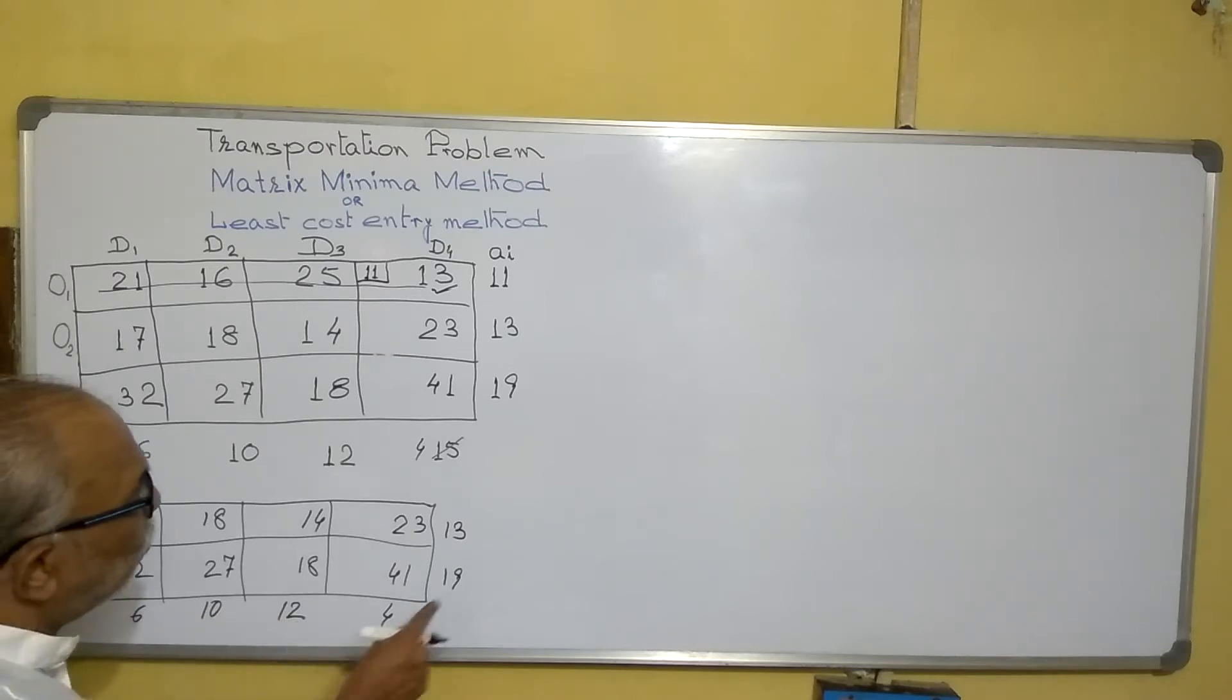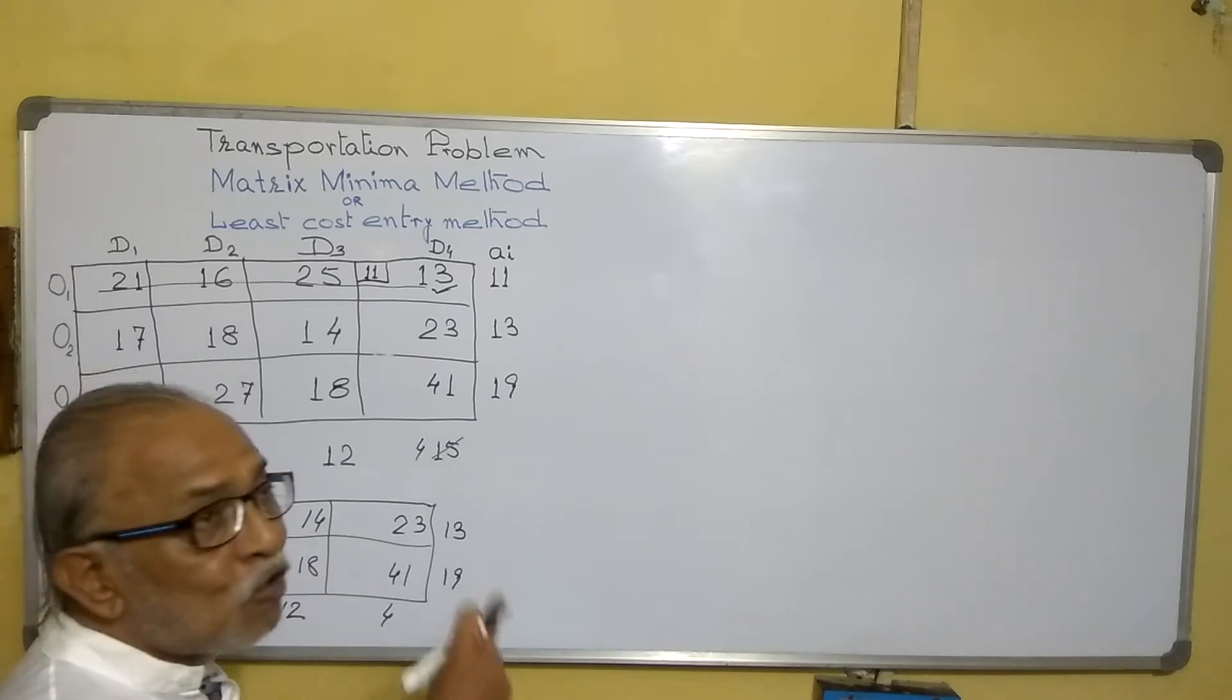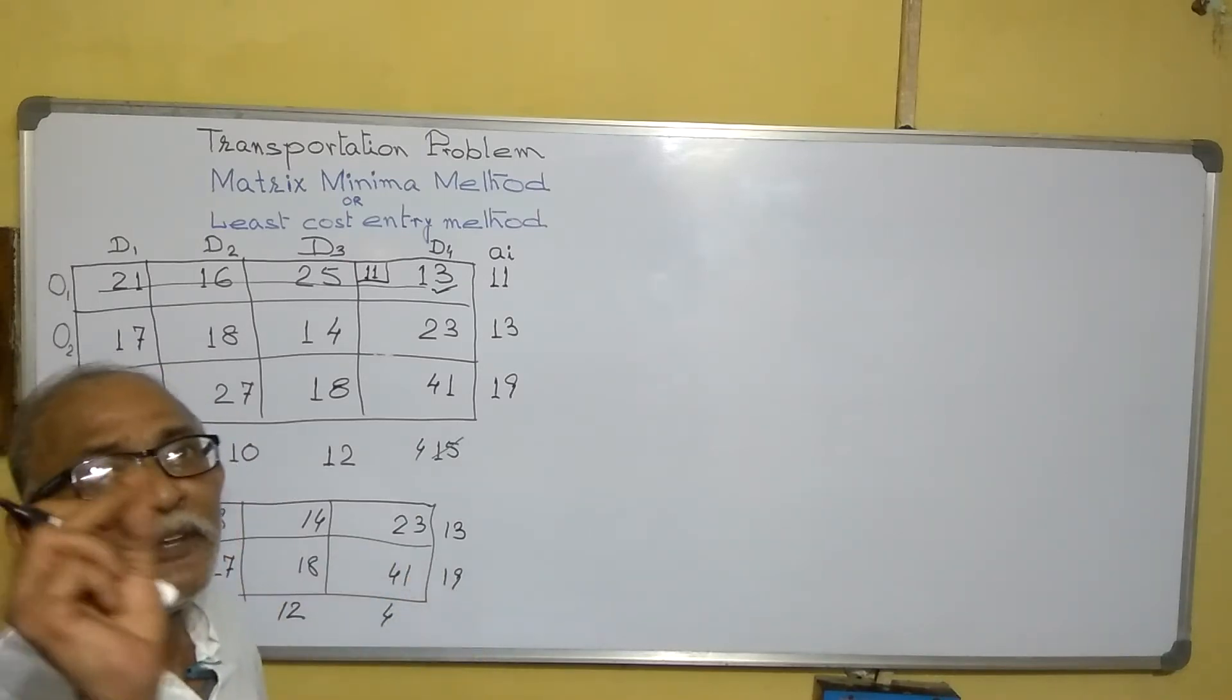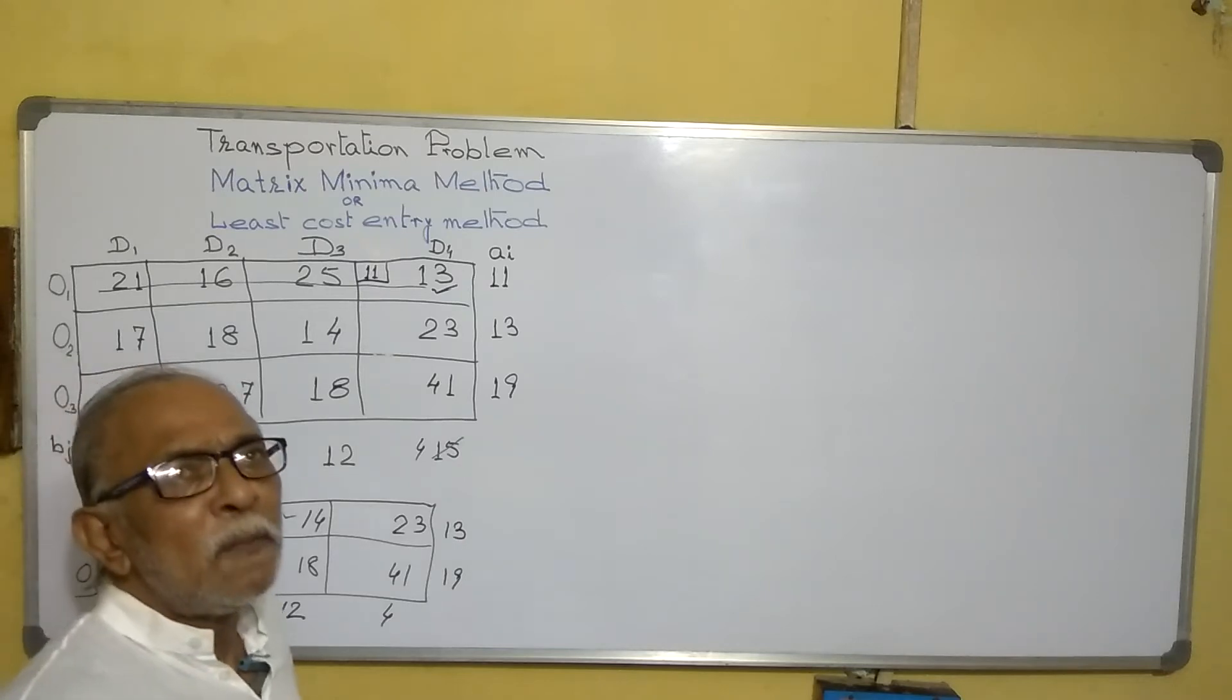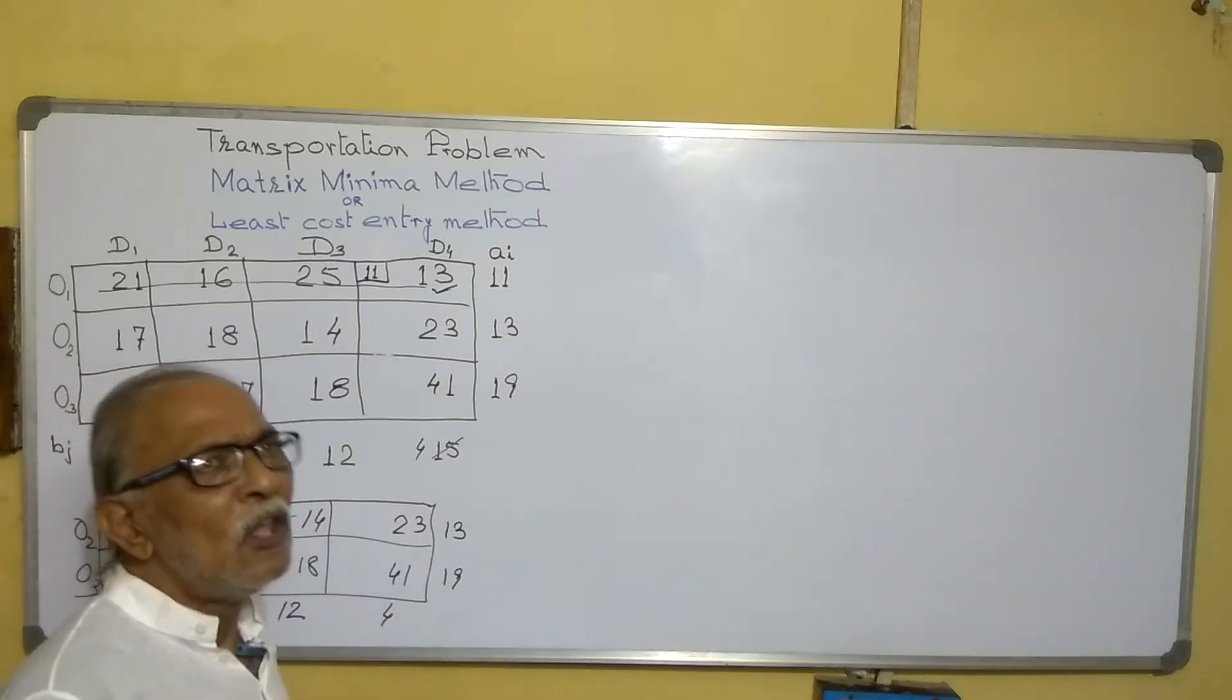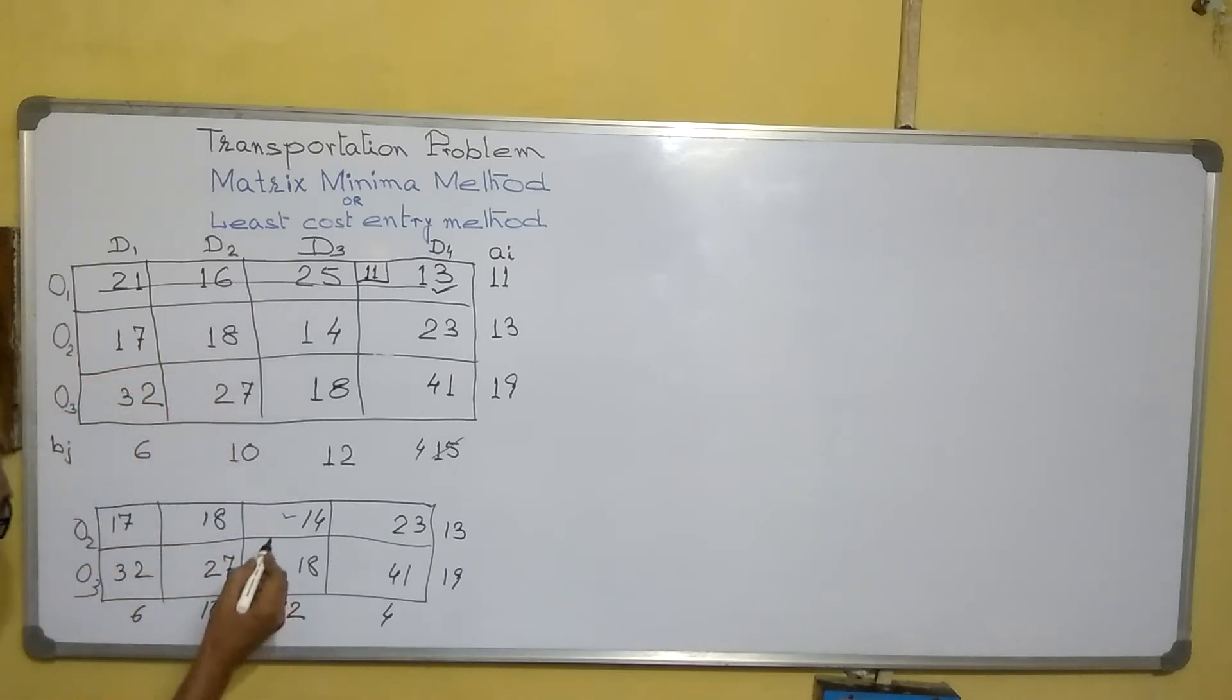These are the four destinations. Here requirement 13 is there and 19 is there. This 11 is exhausted. Here the requirement is 4, here it is 12, 10, and 6. After doing, always check: 6 plus 16 plus 12 is 28, and 4 plus 32 equals 19 plus 13, which is 32. It should be same. Now we can search which one is the least. Here this one is the least. We cannot supply more than 12 because requirement is 12, so we will supply 12 here.